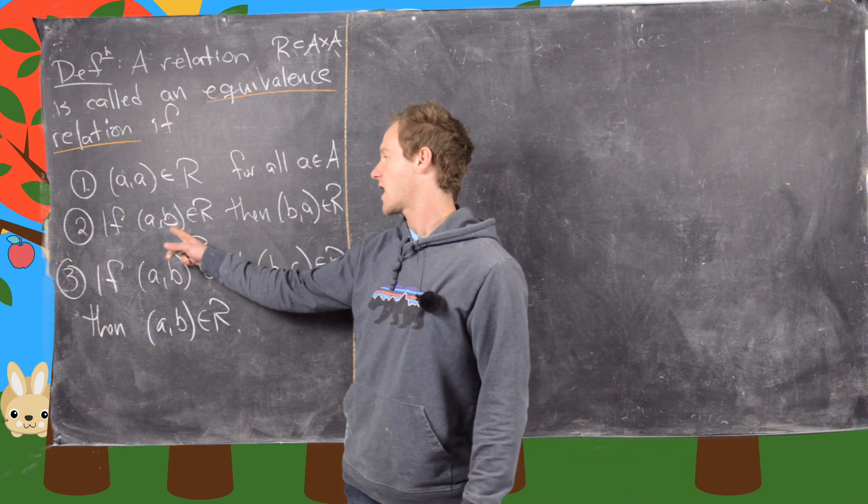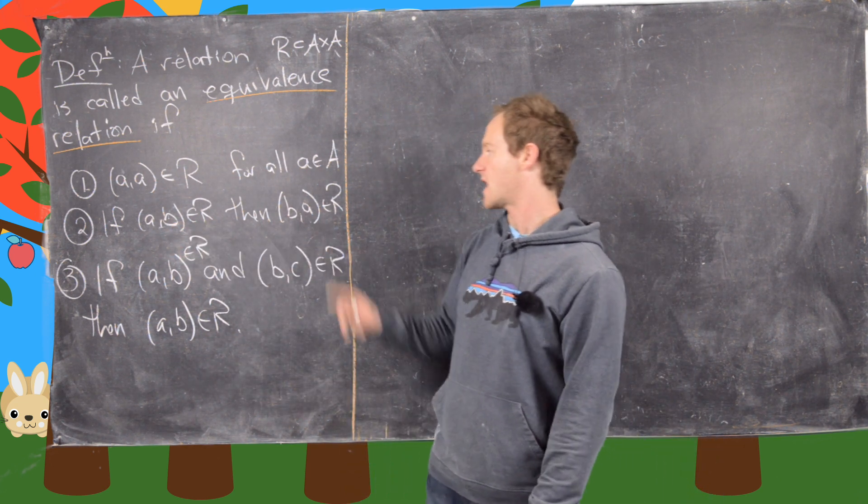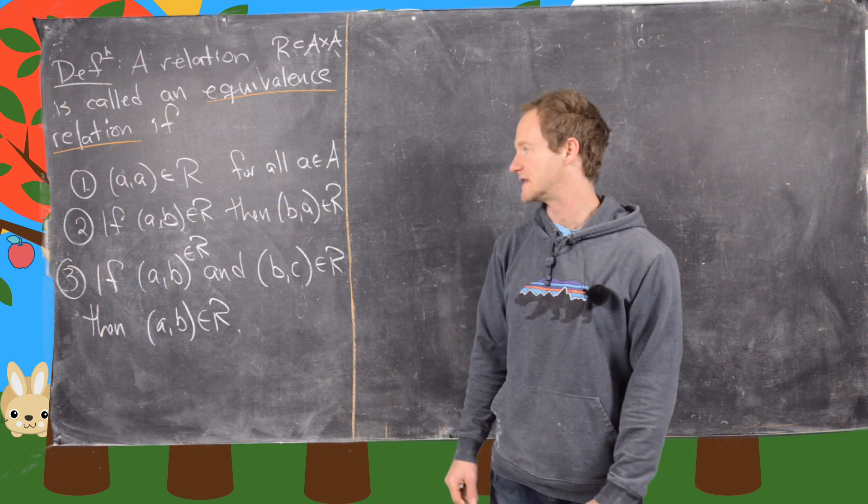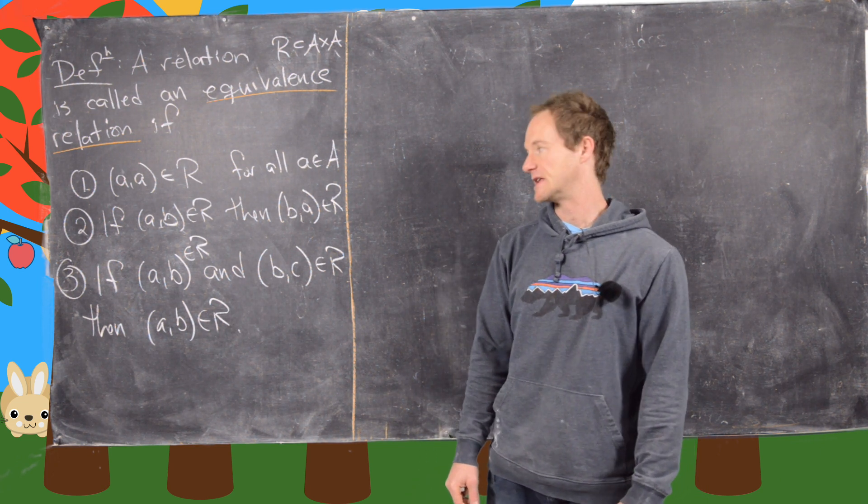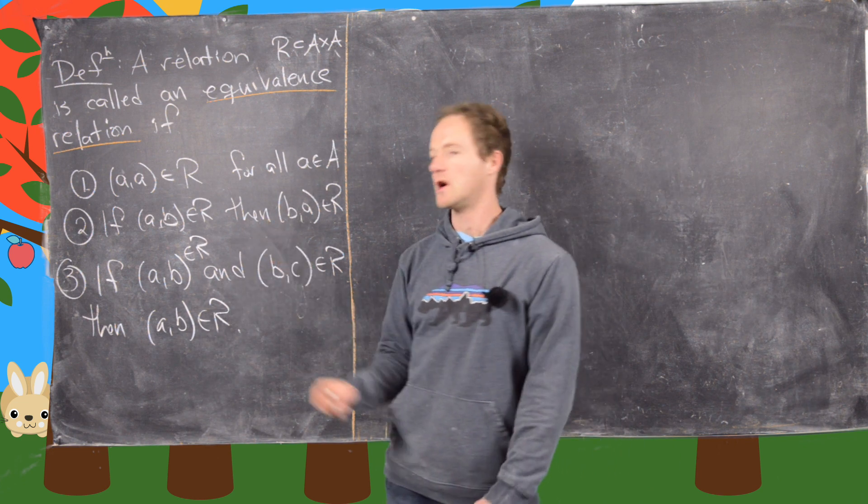If A, B is in R, then B, A is in R. So in other words, if A is related to B, then B is related to A, and that's called symmetry.